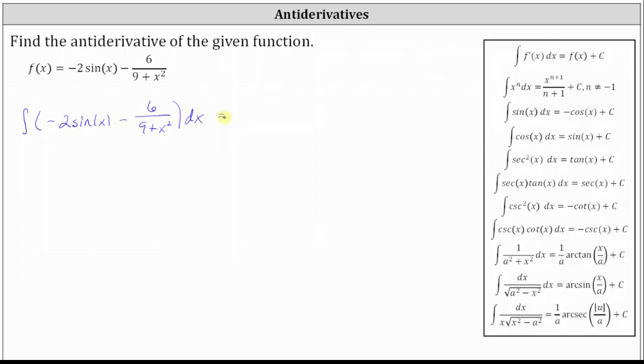The antiderivative of negative two sine x with respect to x is equal to negative two times negative cosine x. We include the plus c at the very end.